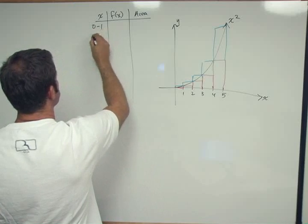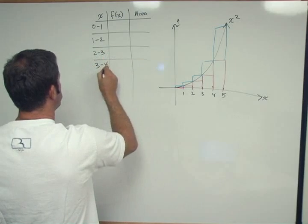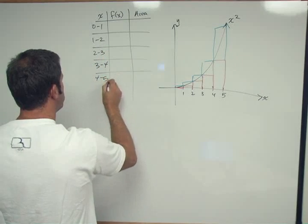So we have 0 to 1, 1 to 2, 2 to 3, 3 to 4, and 4 to 5.